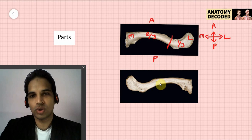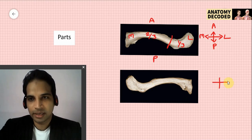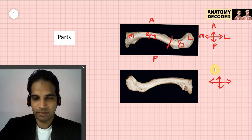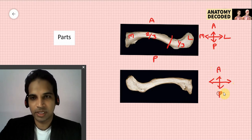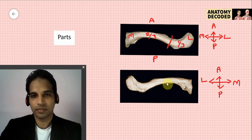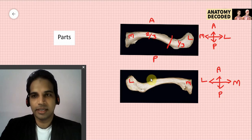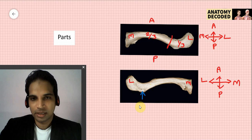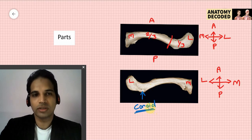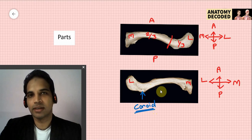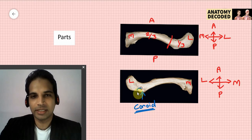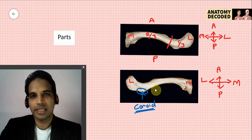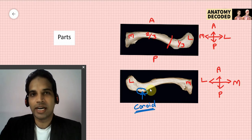This is the clavicle viewed from the inferior aspect — the right clavicle, with anterior, posterior, medial, and lateral orientations. In side determination I was talking about the conoid tubercle — you can see this sharp elevation here. This is the conoid tubercle. It should always be on the inferior aspect when the bone is held in anatomical position. The conoid tubercle is one of the most important features to look for in determining the side of the clavicle, otherwise it may be difficult to identify.